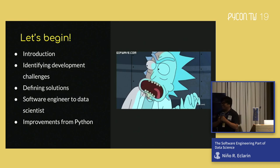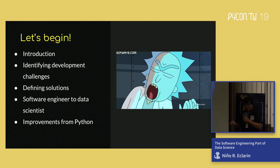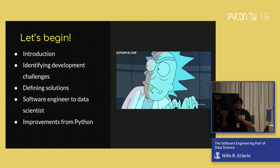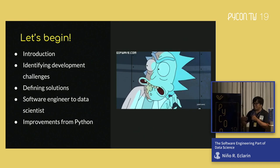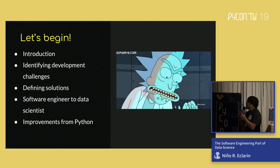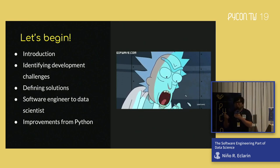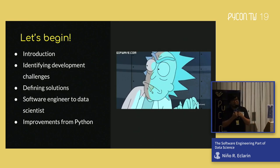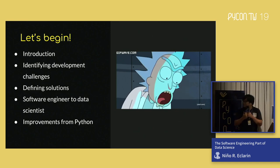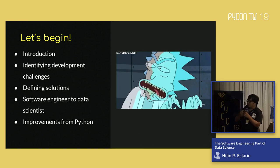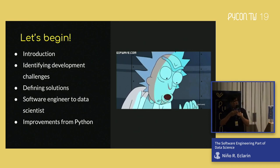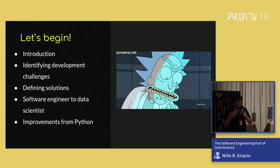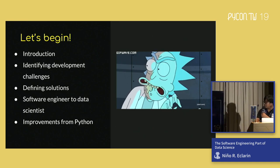Here's the topic I'm going to introduce today. First, we're going to have a brief introduction of the software engineering context in data science — how do software engineers live in a data science world? Then we're going to identify the challenges software engineers encounter working in a data science team. We'll find solutions based on our experience, give key points on converting from software engineer to data scientist, and discuss how Python bridges the gap between those two.